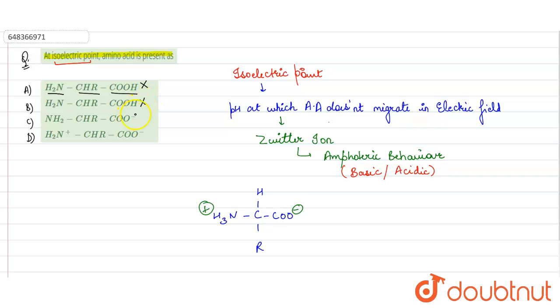First and second are almost the same options. That's why they both are wrong. Third option has negative charge but it does not have positive charge here at amino group.